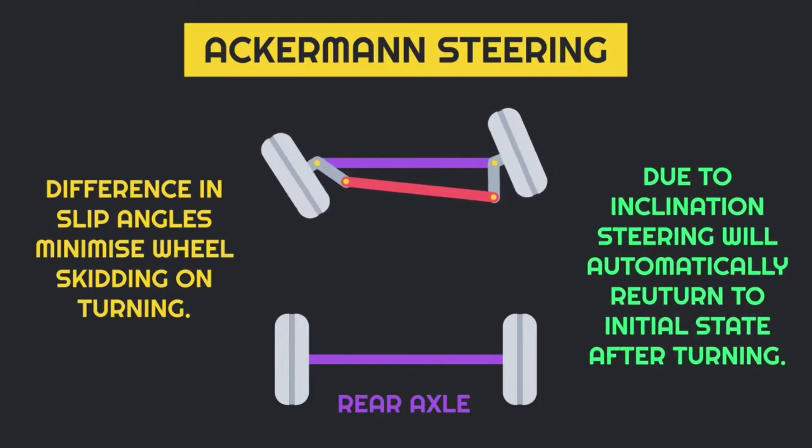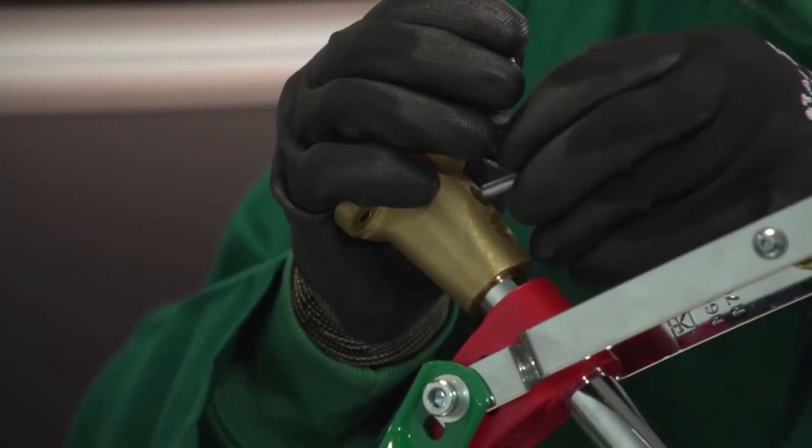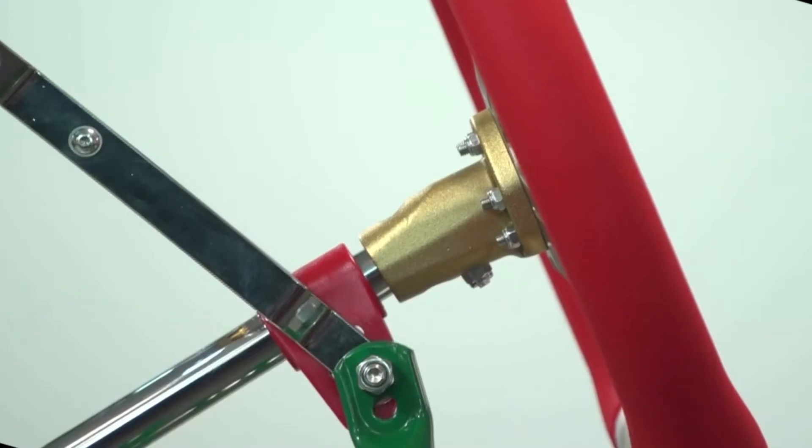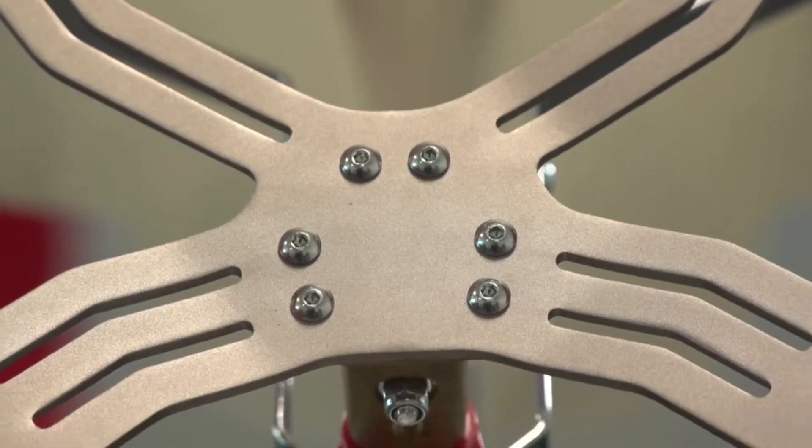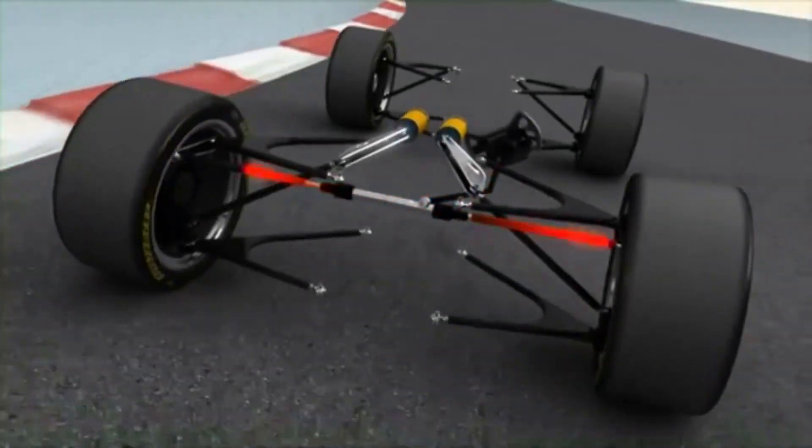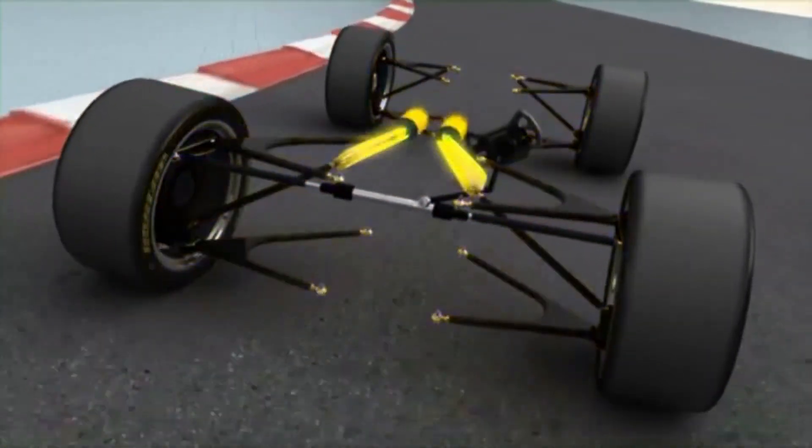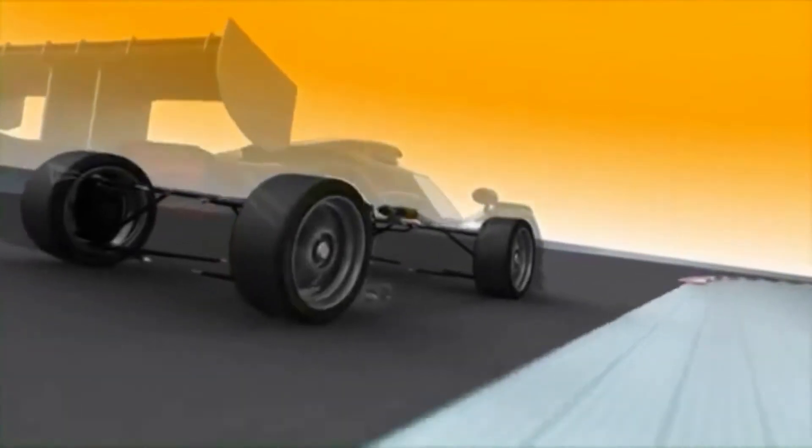Then the tie rod transfers the forces to the steering column which is further transferred to the steering wheel. In this way there is a moment and force transfer from steering wheel to tires and vice versa.